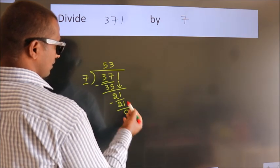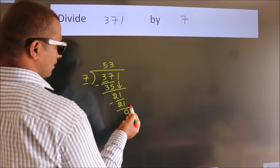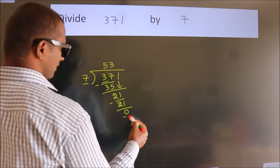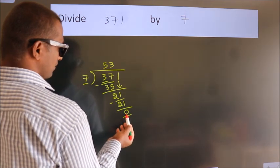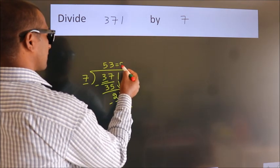After this, no more numbers to bring it down. And we got remainder 0. So this is our quotient.